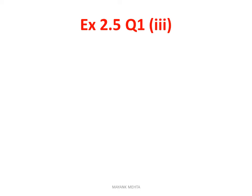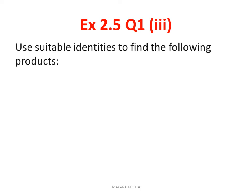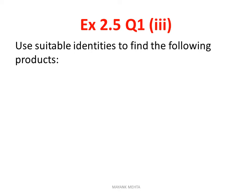First question 1 of Exercise 2.5. What is the question? Use suitable identity to find the following product. You will need to find the product of two binomials and you will need to use suitable identity for that. The first third question I have taken first, (3x+4)(3x-5). Here you can see the first term is same in both the binomials and second term is different. So, guess the identity?